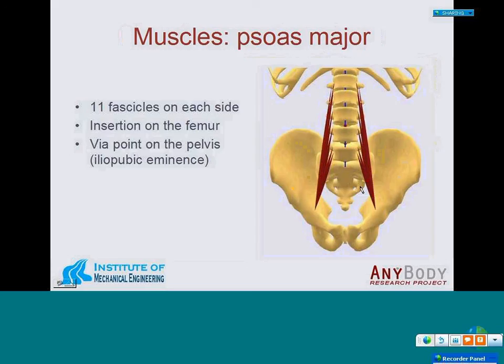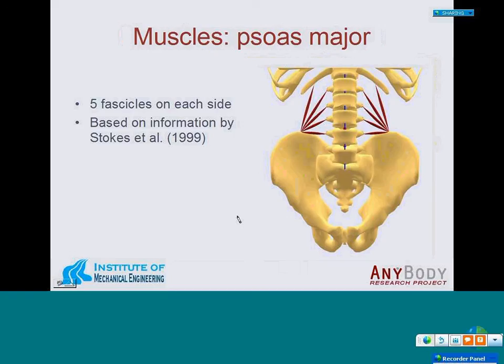Another muscle in the model is the psoas major, modeled as 11 fascicles on each side. The psoas major muscles have small moment arms in flexion and extension, but can produce quite a large compressive force on the lumbar spine. They originate from different parts of the lumbar vertebrae and also from the lower portion, then attach to the femur. A via point on the pelvis at the pubic element is used, so in reality the muscle continues to the femur.